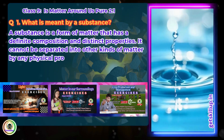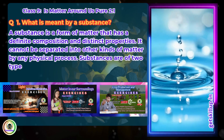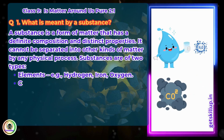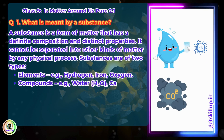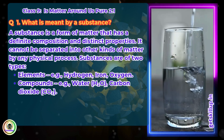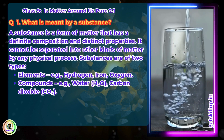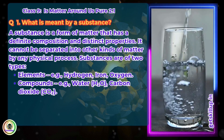Substances are of two types: Elements, e.g. iron, oxygen; and Compounds, e.g. carbon dioxide. Key point: A substance is pure, unlike mixtures which may contain different components.